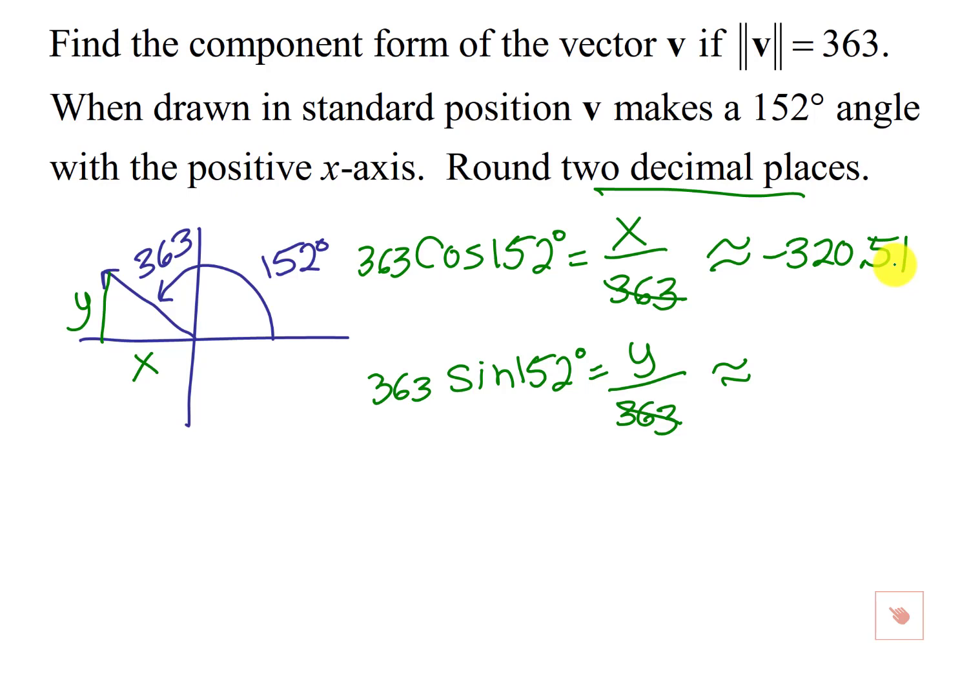Then I do 363 sine 152, and that's going to be 170.42 rounded to two decimal places.